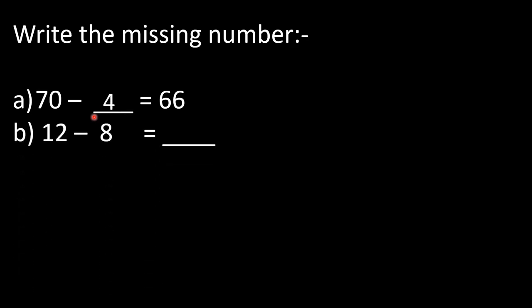In part B: 12 minus 8 is equal to dash. Keep 12 in mind and open 8 fingers, count backward: 11, 10, 9, 8, 7, 6, 5, 4. Answer is 4, so we write 4 here.